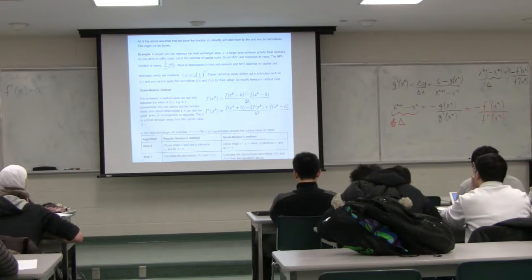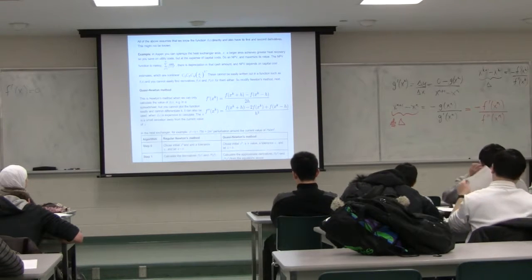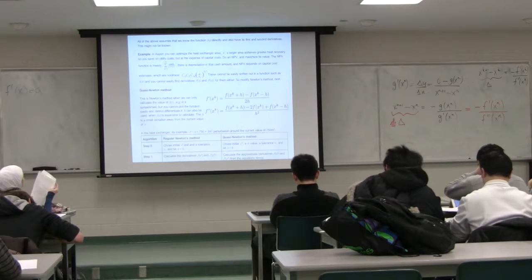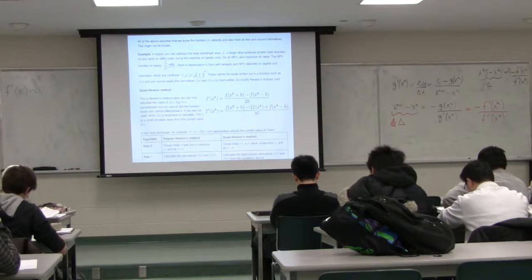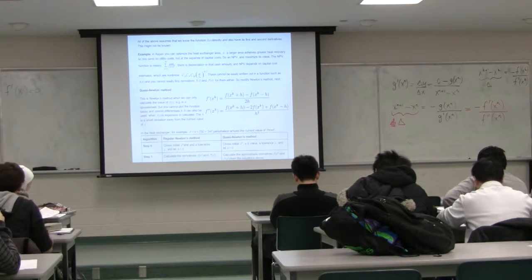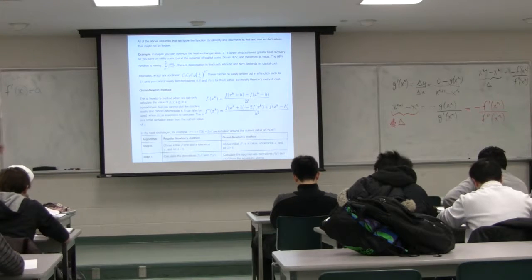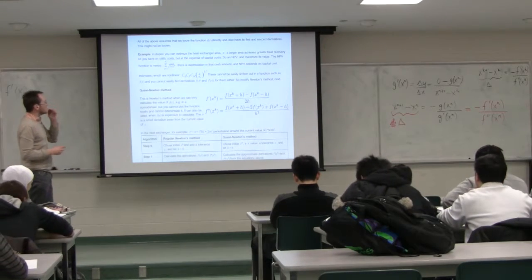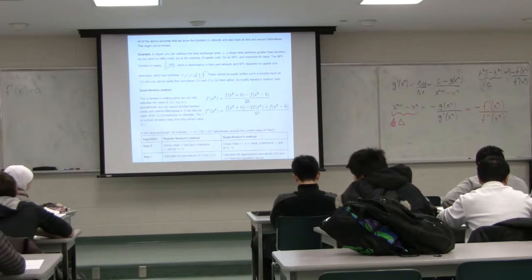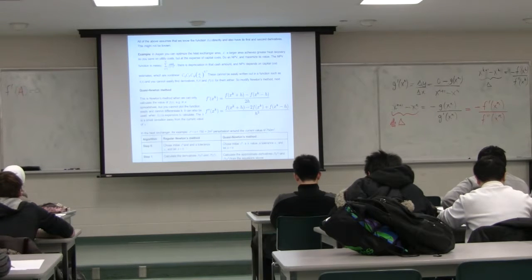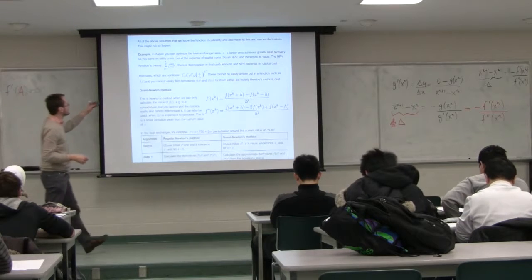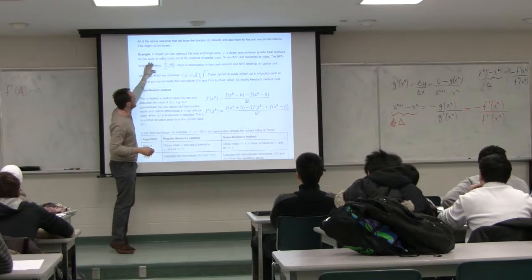Over the page, I want to take this further and think about the situation where we don't know the function explicitly in a form where you can take the first or second derivative. Here's a realistic example: let's say you're going to Aspen and trying to find the optimum area of a heat exchanger. Your function then is F of A — varying the area to find the optimum.